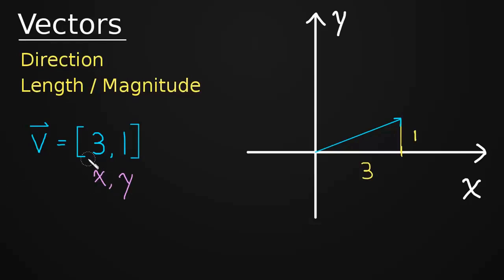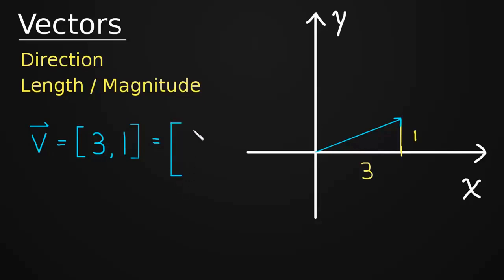Now anyone in the world looking at this vector V equal to (3, 1) can go ahead and draw that vector. They know exactly which vector we're talking about. Just a bit of notation: this is also written as a column vector — it's the exact same information, just vertical. This is still the X component and still the Y component.